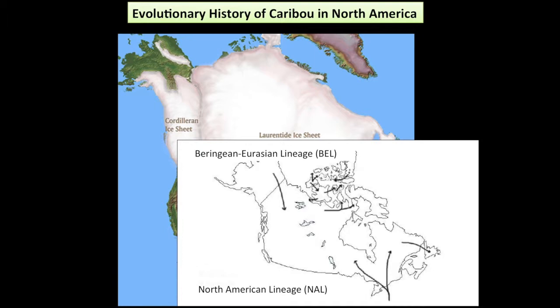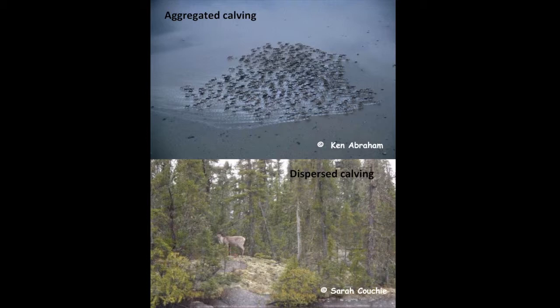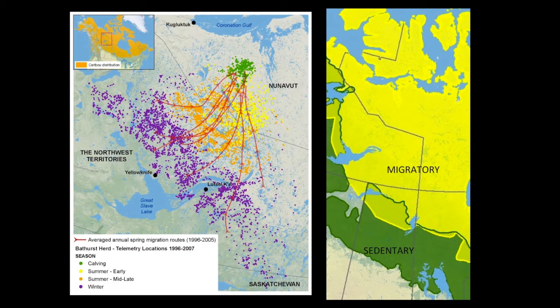Banfield's designation actually made some sense — not the whole thing, but some portions absolutely did. Movements and behavior turned out to be very important because they are very likely manifestations of local adaptations that have arisen through time due to distinct and significant ecological settings. In particular, we looked at aggregated versus dispersed calving. During that time of year, calving really does have much relation to individual fitness, so the dispersion or aggregation of calves would be assumed to be inherited traits, much of which could be explained by the different pieces of geography where these caribou dwell.